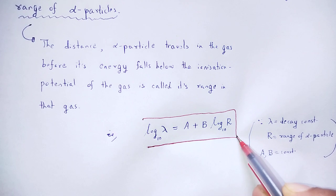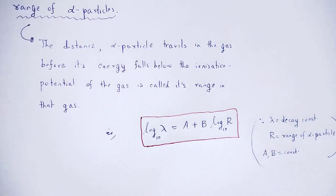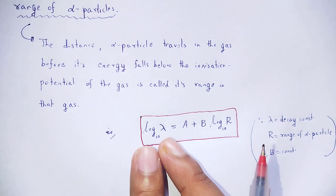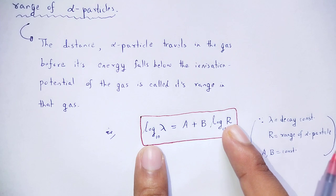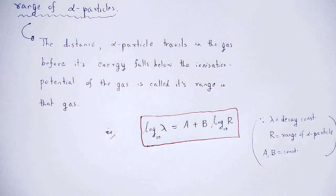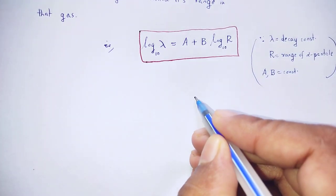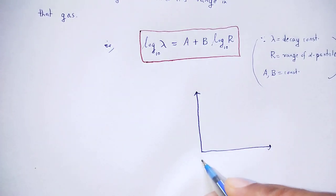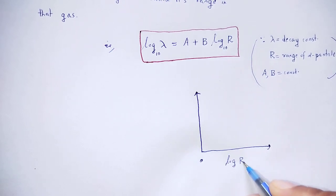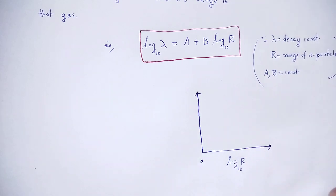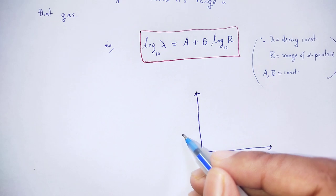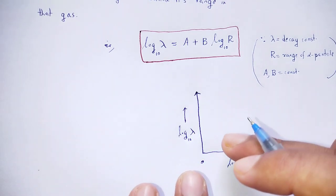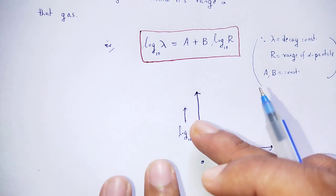Geiger and Nuttall showed the relation between decay constant and range of alpha particle. When a graph is plotted of the logarithm of the decay constant against the range of alpha particle, we get a linear graph — as the range increases, the decay constant increases.